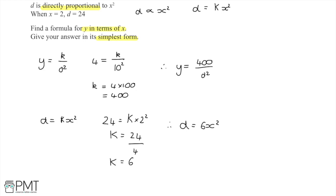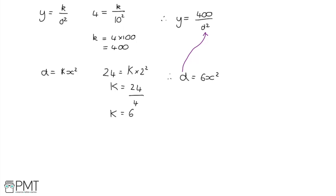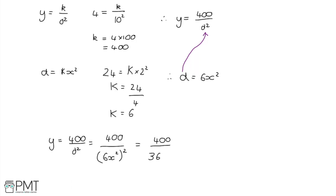Now I have two equations: y equals 400 over d squared, and d equals 6x squared. I can substitute the expression for d into d squared. So y equals 400 over 6x squared, all squared. That gives 400 over 36 — since 6 times 6 is 36 — and x squared raised to the power of 2, which by multiplying the powers gives x to the power of 4.